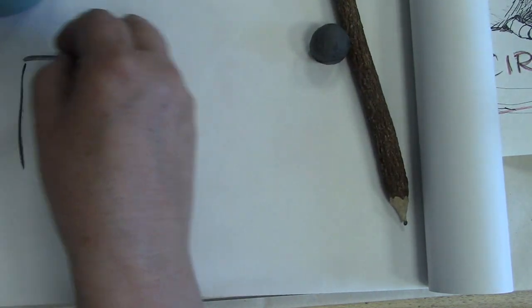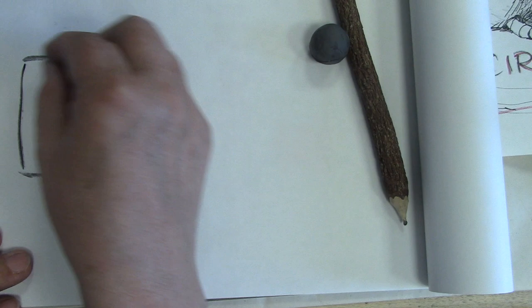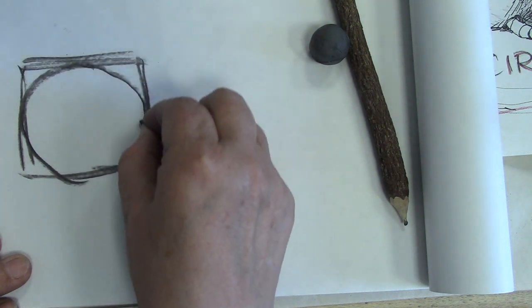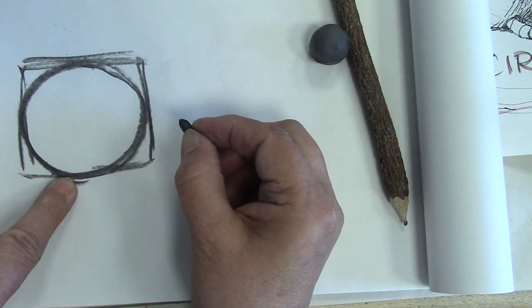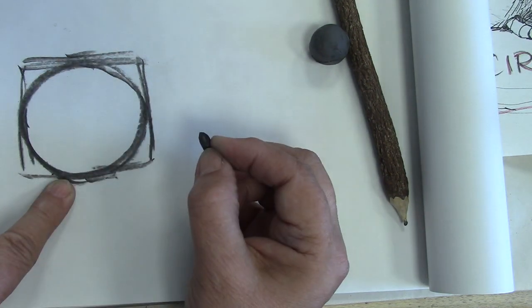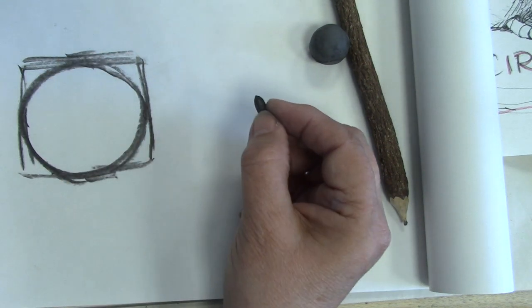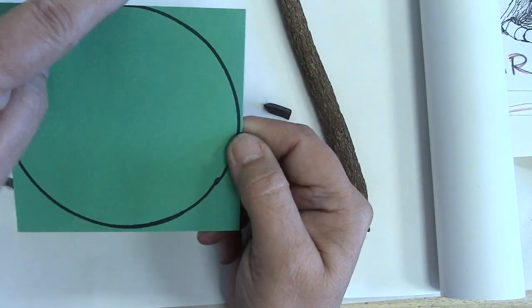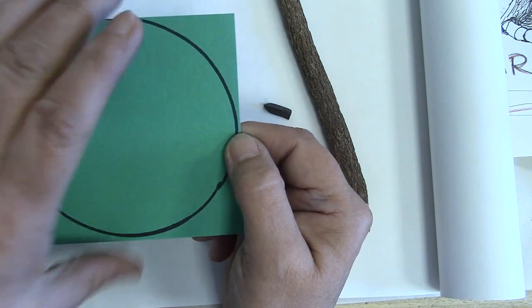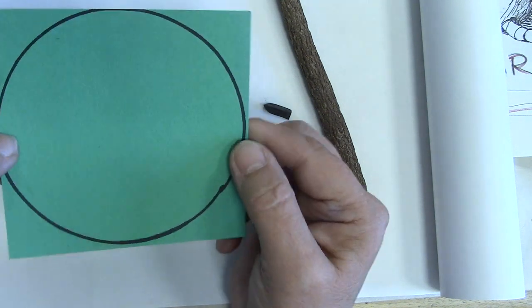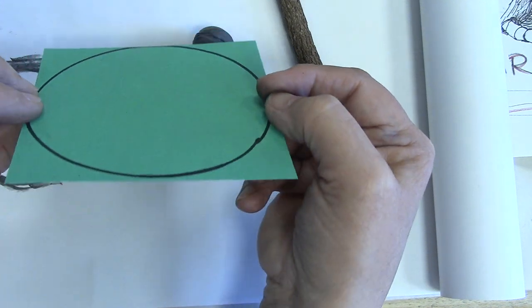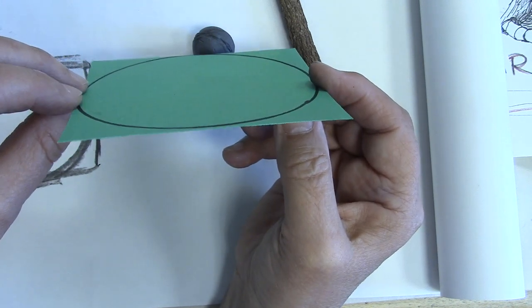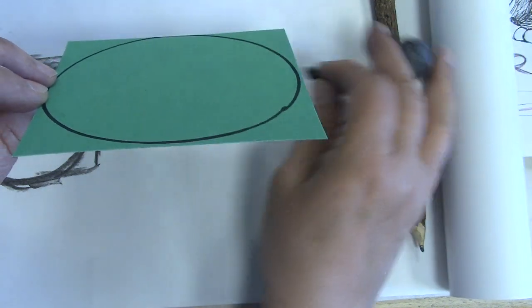When we draw a circle straight on, like we draw a square straight on, it touches the sides of the square in four places. I've drawn that here. It touches the sides of the square in four places evenly because it's a perfect square and a perfect circle. Now we turn it away from ourselves. It's no longer a perfect square, nor is it a perfect circle. It's an ellipse. And how do we do that?